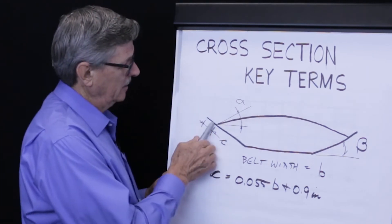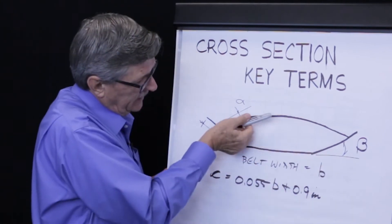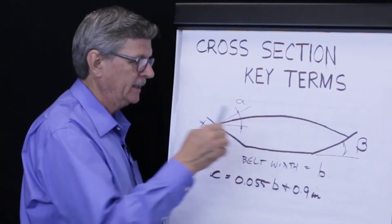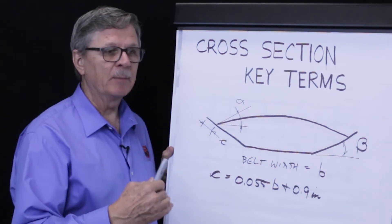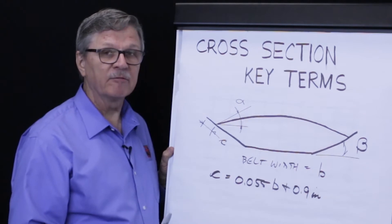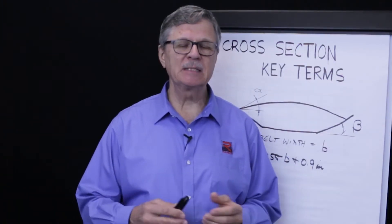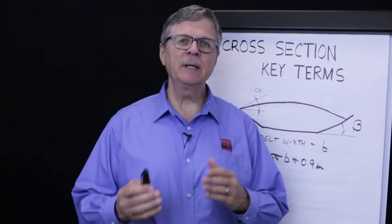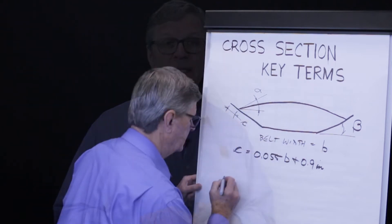Once we know the minimum edge distance and the geometry defined by this arc and the trapezoid beneath it, we can calculate what CEMA recommends as the maximum number of square feet on this particular trough. Once we know the CEMA recommended maximum cross section, we can compare the design rate for our given set of parameters against that CEMA recommendation.